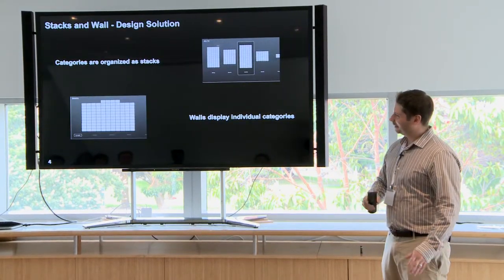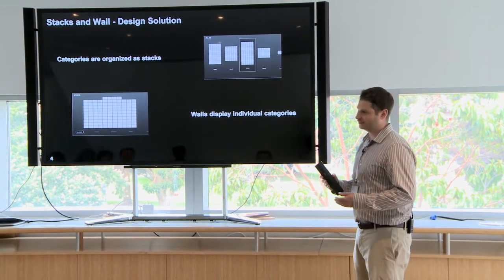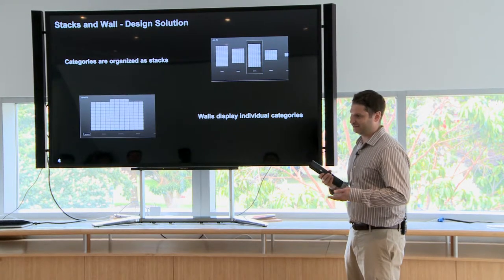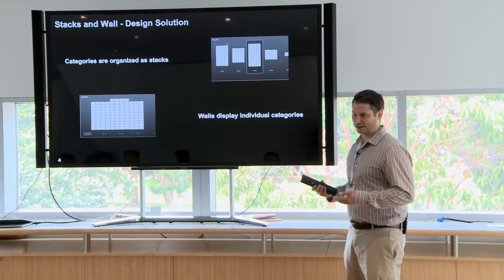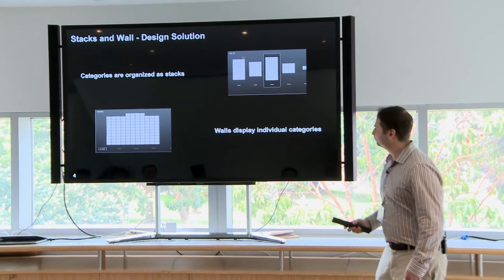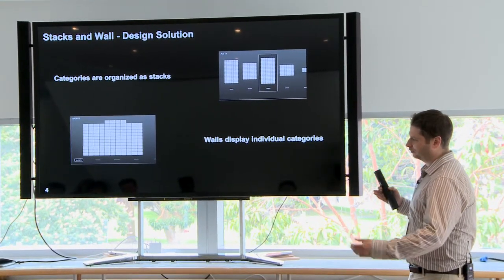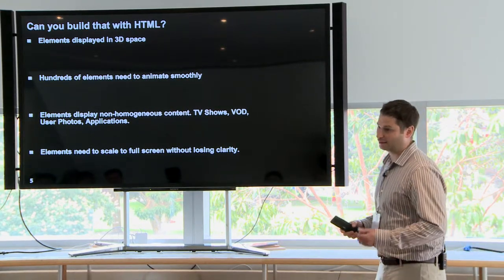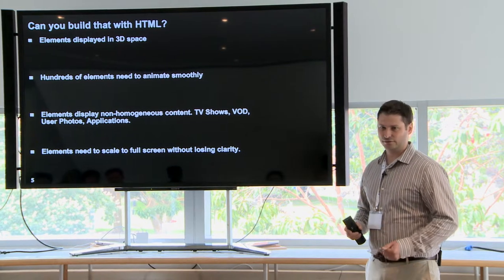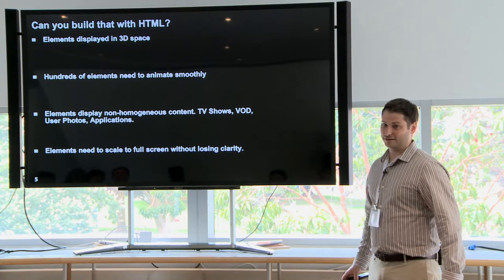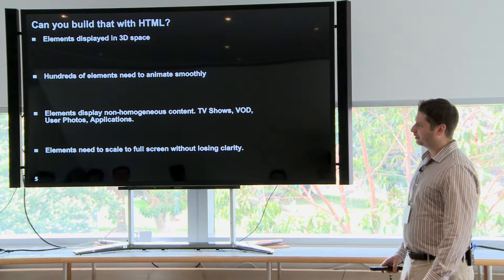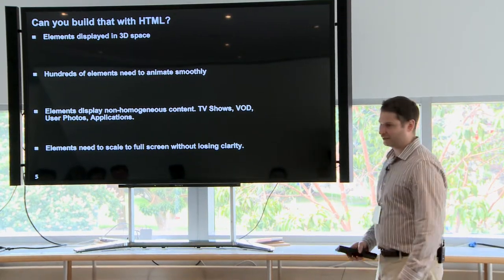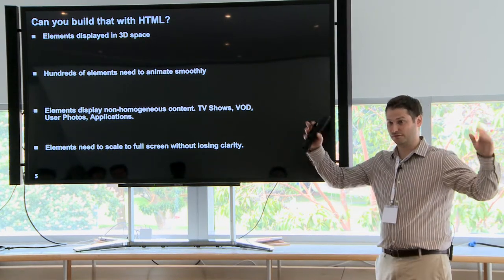They came up with a system where we had a bunch of elements that could be non-homogeneous — video elements, a stack of video elements, or a mix of movies, TV, YouTube, and home content like photos and home movies, all mixed into a stack. Once you hit that stack, it comes forward in 3D space and you have this wall of content. The challenges were: a 3D interface, which is harder to do in HTML which isn't designed for it; lots of content that needed to animate and animate smoothly; non-homogeneous content that needed to be dynamically updated very fast; and taking elements from a tiny point in 3D space up to full screen and having that look good.